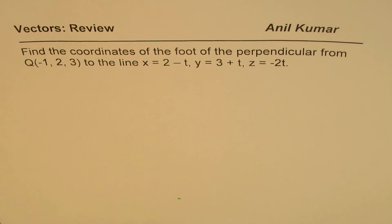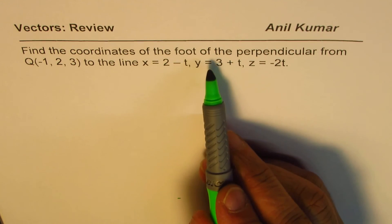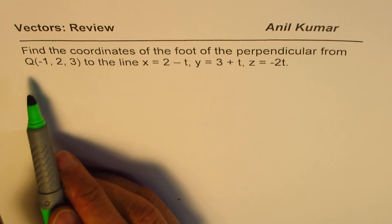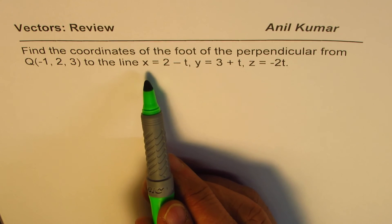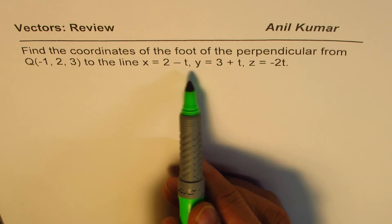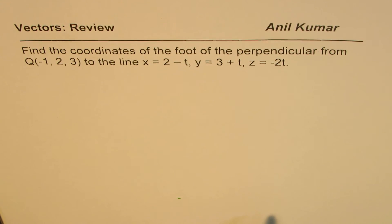I'm Anil Kumar and here is a very interesting question to review vectors. The question here is, find the coordinates of the foot of the perpendicular from Q(-1, 2, 3) to the line x = 2 - t, y = 3 + t, z = -2t.